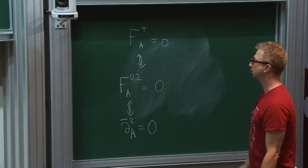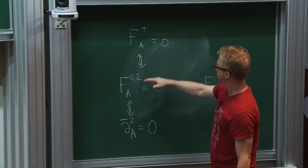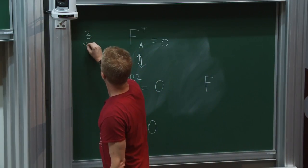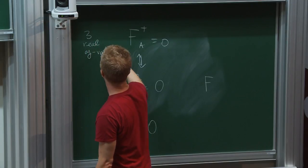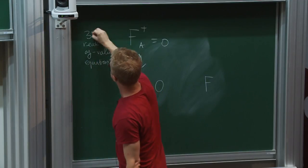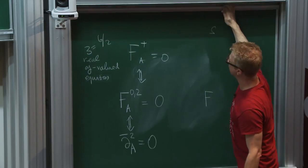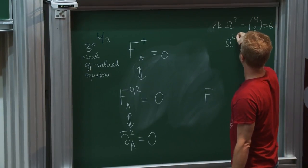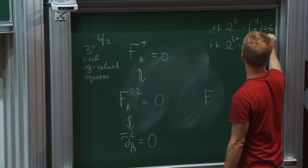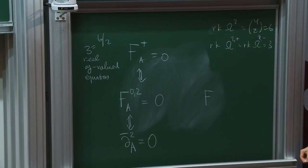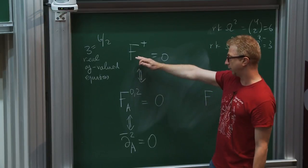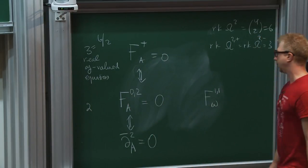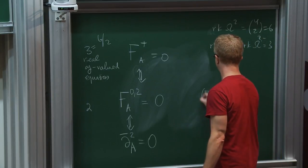This is worth two real equations — it's one complex equation. The anti-self-dual equations comprise three real equations because the space of two-forms has rank 6 = 4 choose 2, split into self-dual and anti-self-dual three-dimensional spaces. So F_{0,2}=0 accounts for two equations, and there is one equation missing: the component of the curvature along the Kähler form.